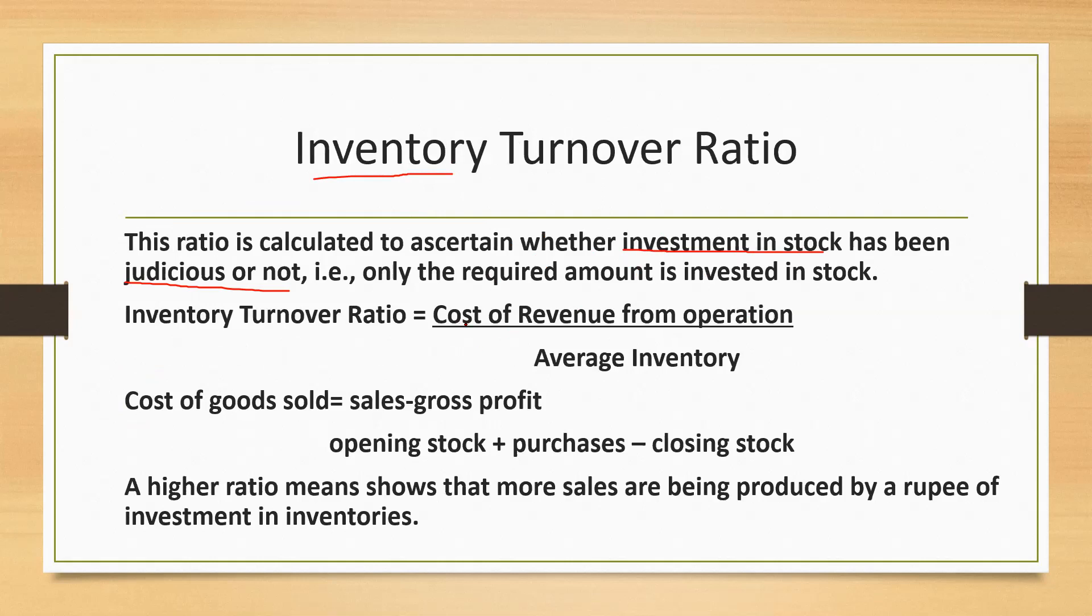The formula for that is cost of revenue from operation divided by average inventory. Now cost of revenue from operation, we have already learned this in 11th standard: sales minus gross profit. This is the first formula. Or it can also be calculated from opening stock plus purchases less closing stock, cost of goods sold. What is average inventory I will be explaining in the following sum which we will be doing after this.